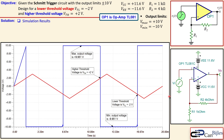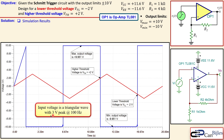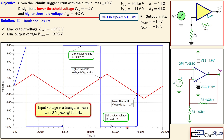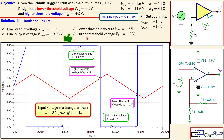This is the simulation plot: the blue line is our output voltage and the red is our input voltage. The input is a triangular wave with a 3-volt peak at 100 Hz, going up and down between +3V and -3V, allowing us to clearly see what happens. The output voltage maximum and minimum are labeled: +9.95V and -9.95V — very close to ±10V, with only about 50 mV error, acceptable for practical purposes. The high threshold is labeled at +2V and the low threshold at -2V, exactly as designed.